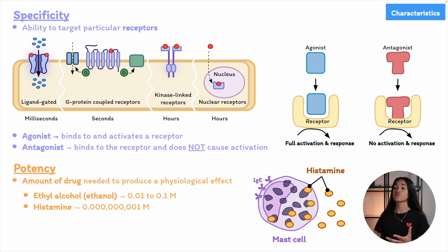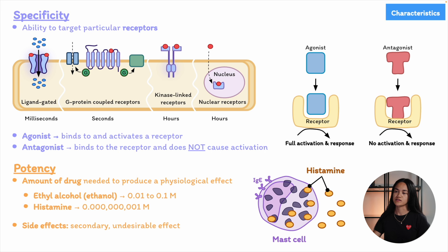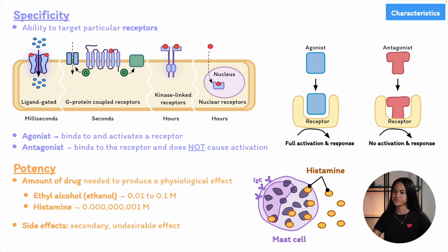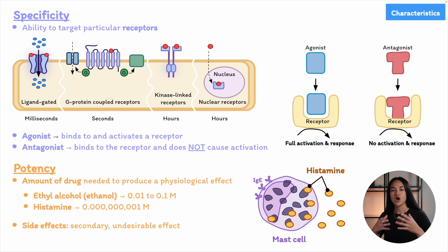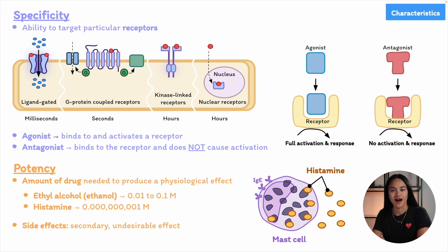It's important to remember that APIs can have side effects — unwanted or secondary effects that occur alongside the intended therapeutic effects. For example, aspirin, when not used correctly or taken in excess, can cause serious side effects like gastric bleeding, ulcers, or kidney damage.